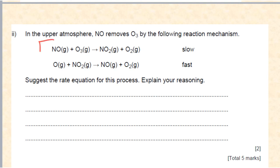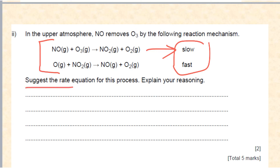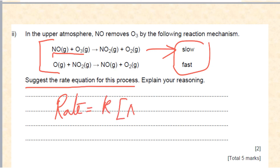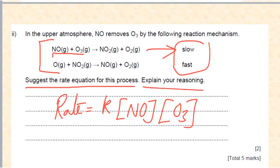The catalyst in this reaction is NO — it is used in step one and regenerated in step two. To justify: state that NO is used in step one and regenerated in step two. For the second part of the question, the first step is the slow step and you need to write a rate equation. Just look at the species involved in the slow step: rate = k[NO][O3]. Explain your reasoning: in the rate determining step, one molecule of NO and one molecule of ozone O3 are involved.